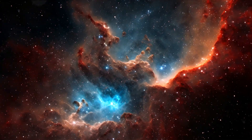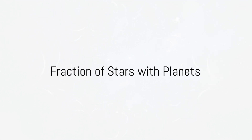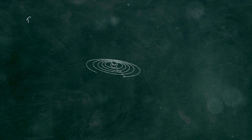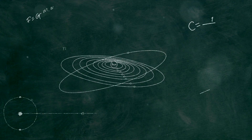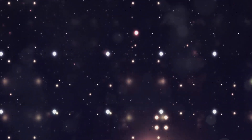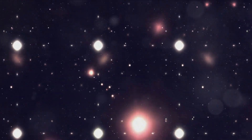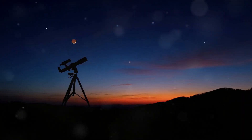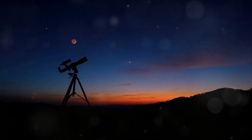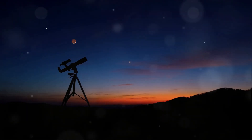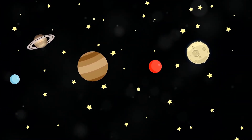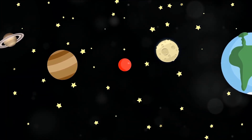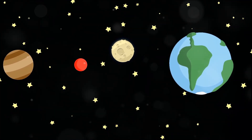Stars are the birthplaces of planets, so it's important to understand how often they form. Not all stars are created equal — some have planets orbiting them. This introduces us to the second variable in the Drake equation: the fraction of stars with planets. This variable is crucial because, in the vast cosmos, not every star plays host to a planetary system. We used to think that planets were rare, but thanks to advancements in technology and the tireless work of astronomers, we now know that's not the case. We've entered an era of exoplanet discoveries, where planets beyond our solar system, known as exoplanets, are being found at an astonishing rate.